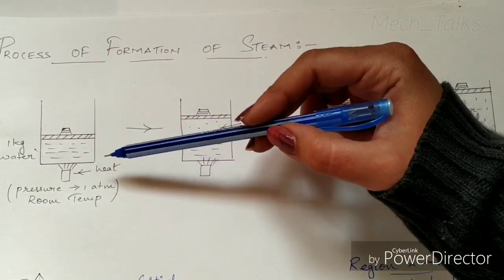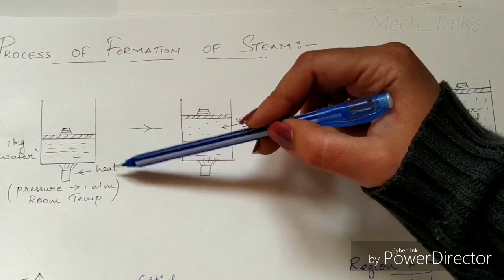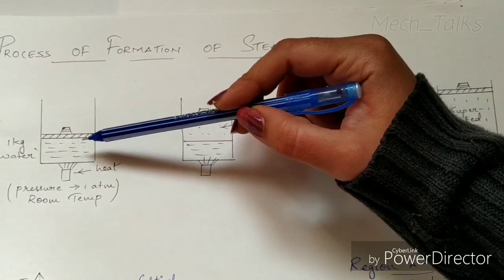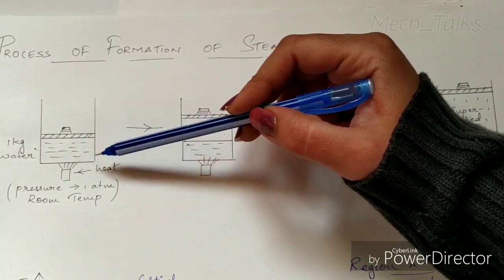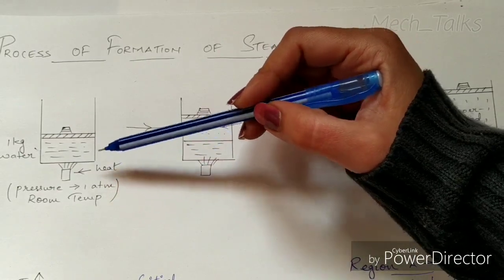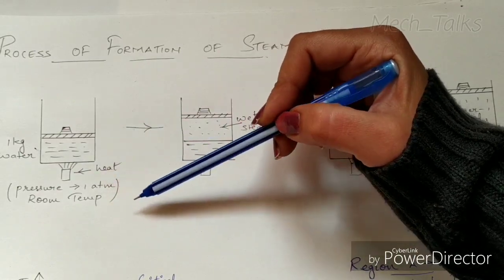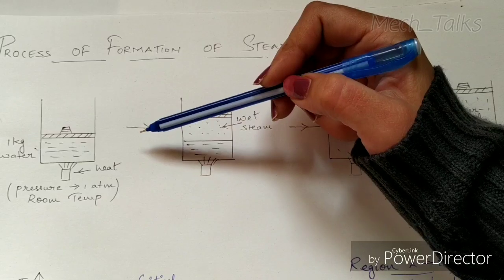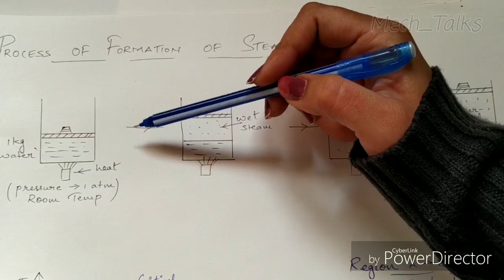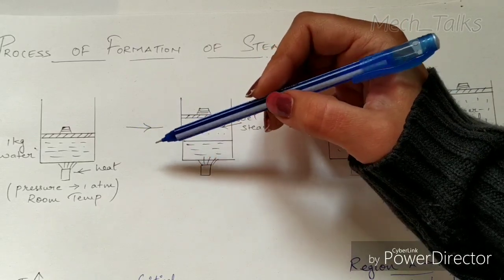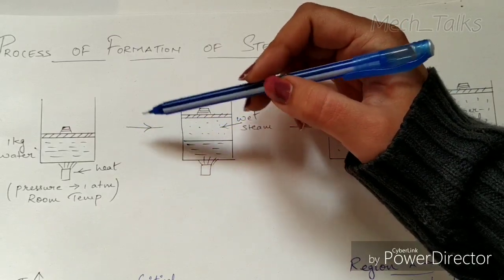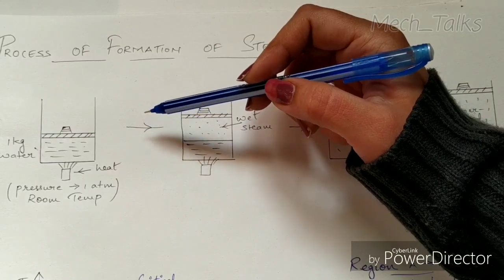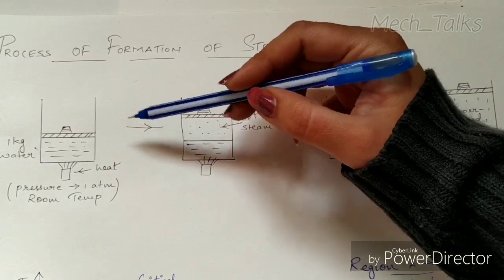I am supplying heat to this particular quantity of water. On heating this water slowly, the temperature rises, and particularly at 100 degree centigrade temperature — that is the boiling point for water.